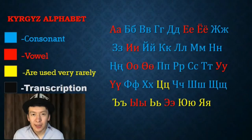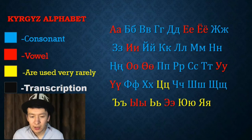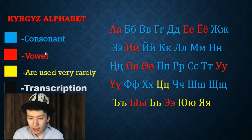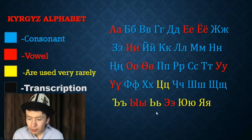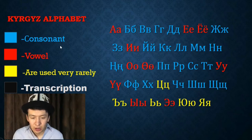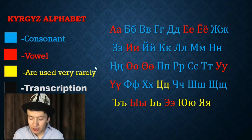First, let me explain the structure that you can see here. You can find out which one is a consonant and which one is a vowel, and here you can see the yellow letters. The yellow letters are used very rarely and are consonants. Consonant is 'Ünsüz tübüşhtar', and vowel is 'Ündüü büşhtar'. Here you can also find the transcription.